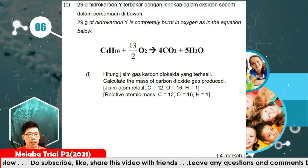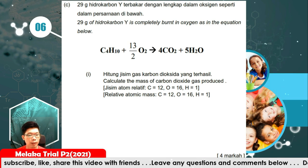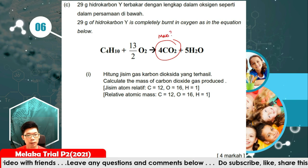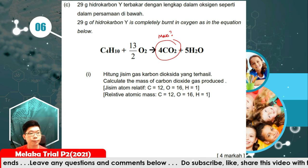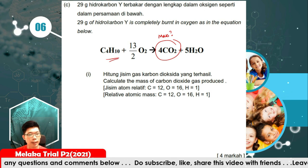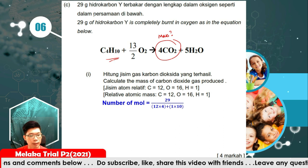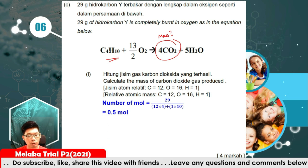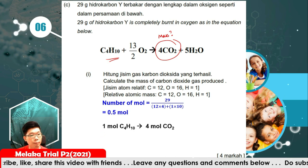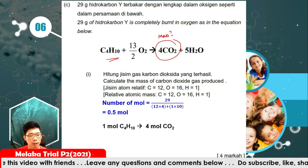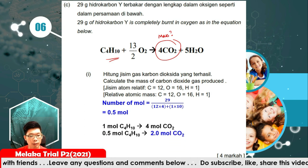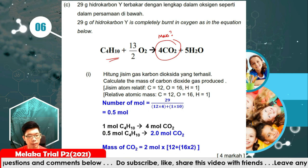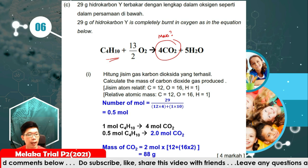29 grams of hydrocarbon Y (C4H10) burns completely in oxygen. Calculate the mass of carbon dioxide gas released. First, calculate the number of moles: 29 over the molar mass gives 0.5 moles. Using the mole ratio, 1 mole of butane produces 4 moles of CO2, so 0.5 moles gives 2 moles of CO2. Mass of CO2 equals moles times molar mass, giving 88 grams.